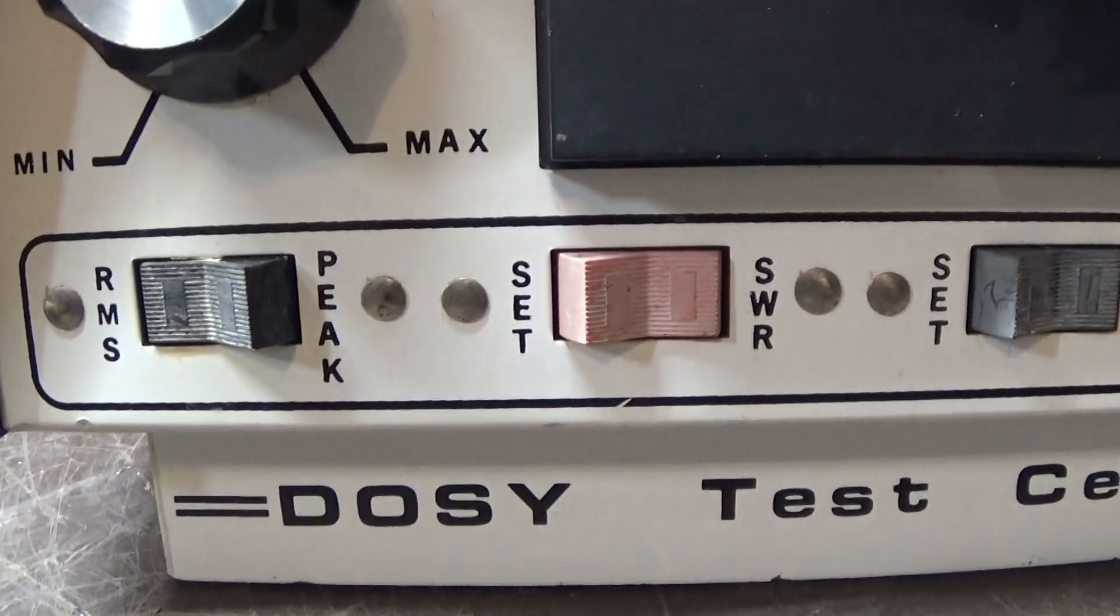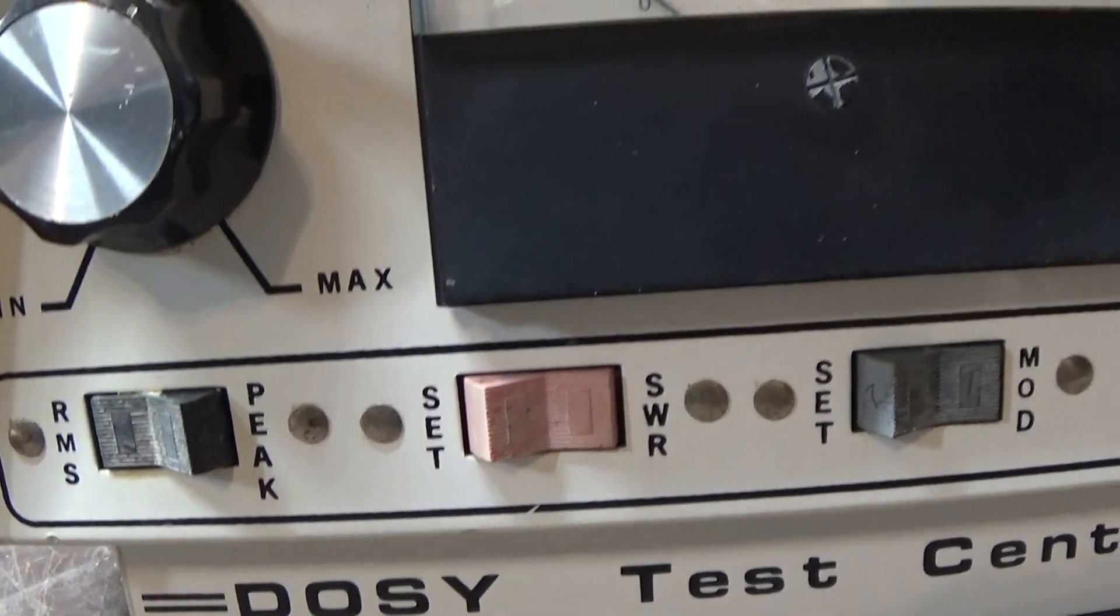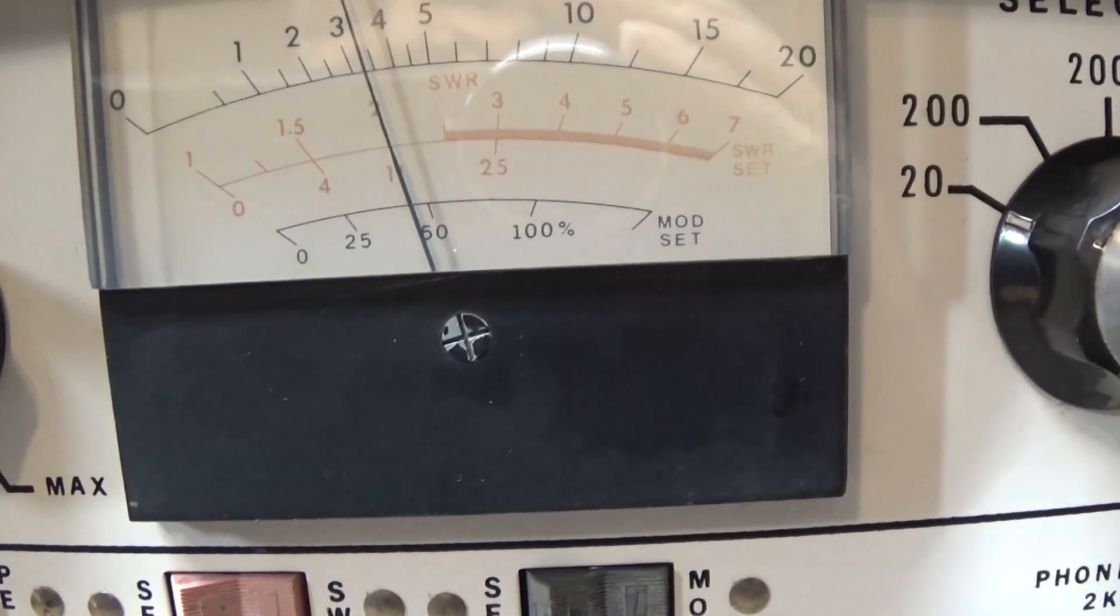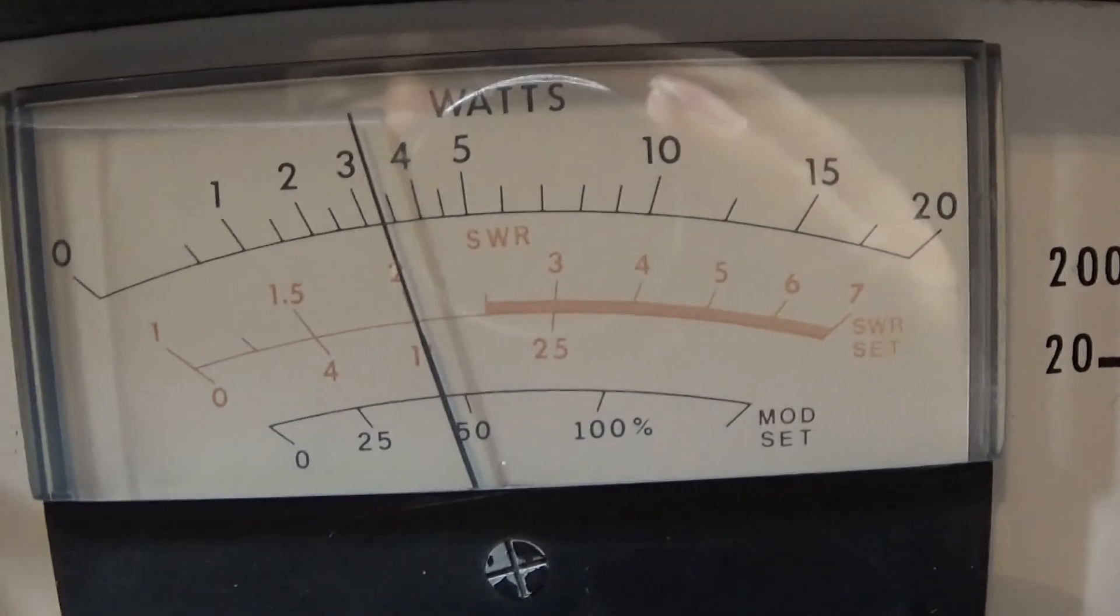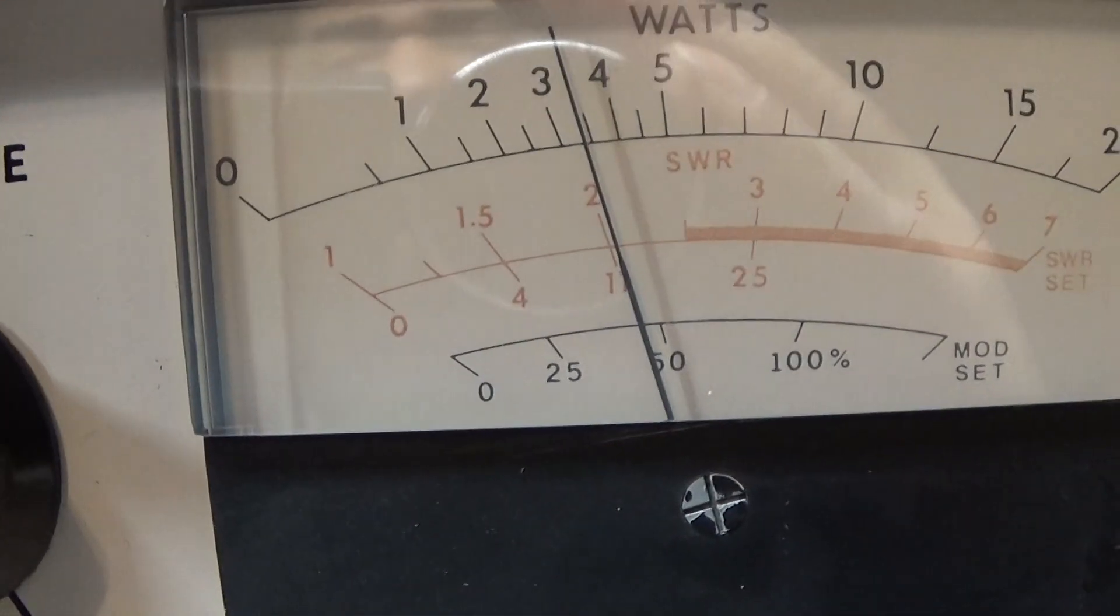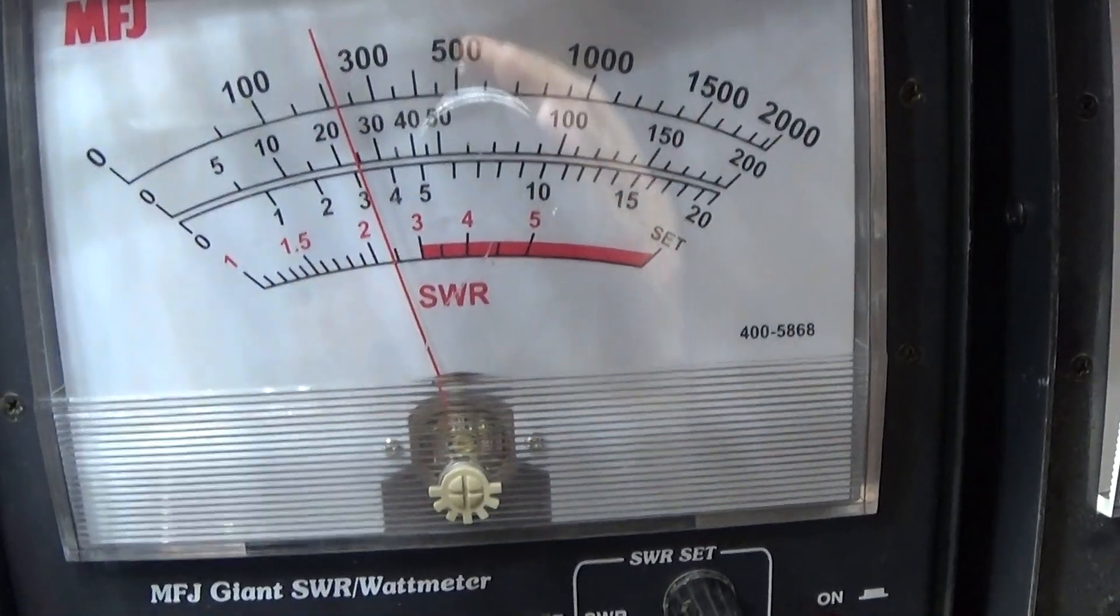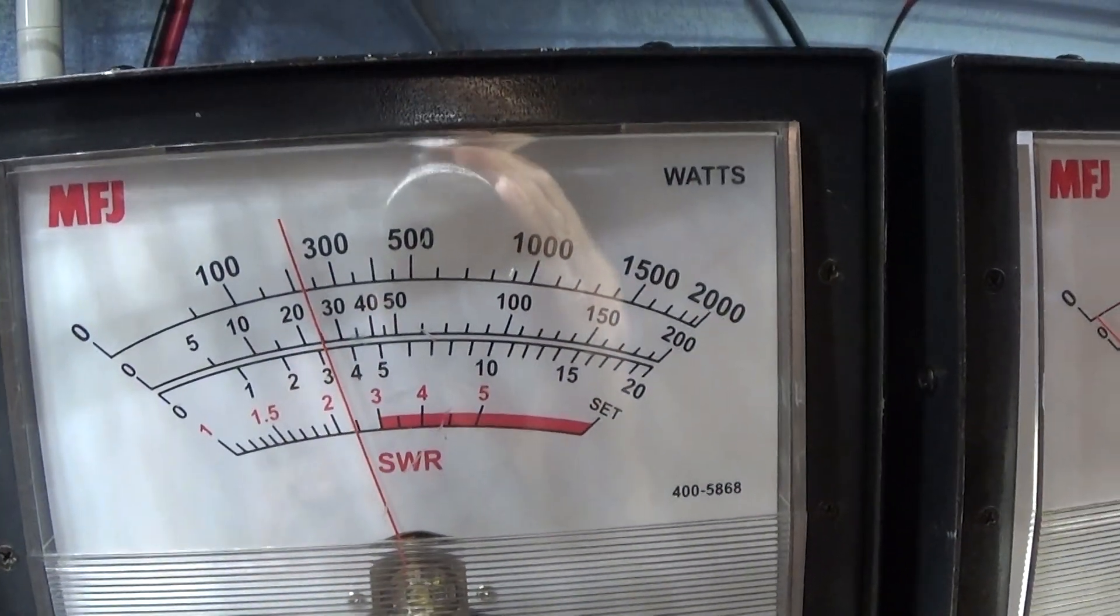On average here on the MFJ at the 20 watt scale, we're keying at just under three and a half watts, and over here on the Dozie, a little bit under three and a half watts.